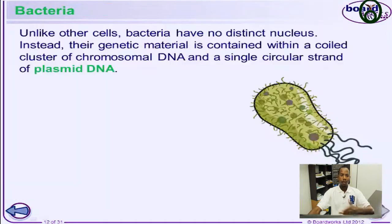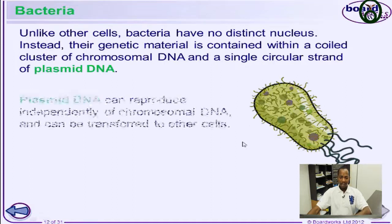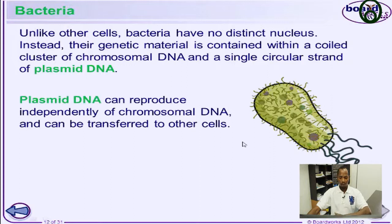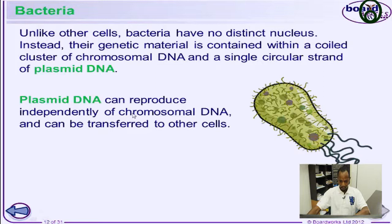Looking at bacteria in general: the bacteria DNA is made up of a cluster of chromosomal DNA and has a single strand called the plasmid DNA. The plasmid DNA can reproduce independently of the chromosomal DNA, and they can also be transferred to other cells, functioning independently from the main parent chromosomal DNA.